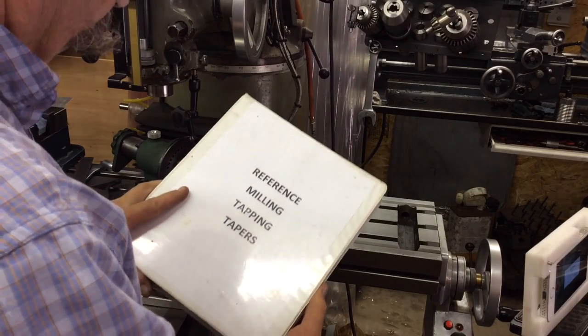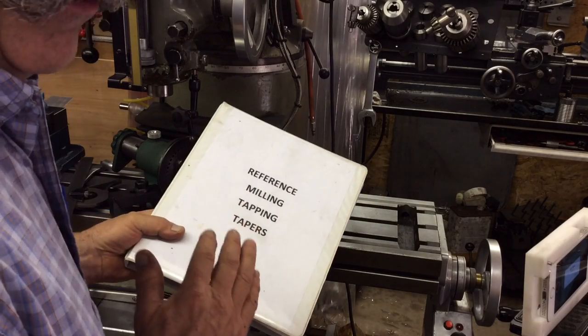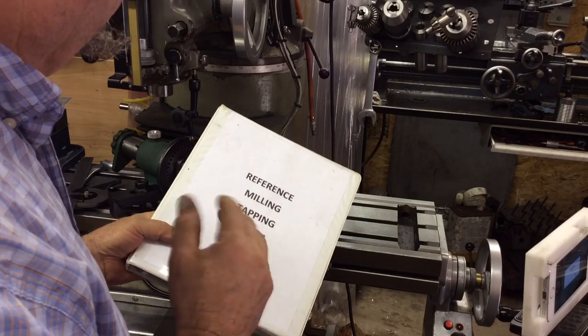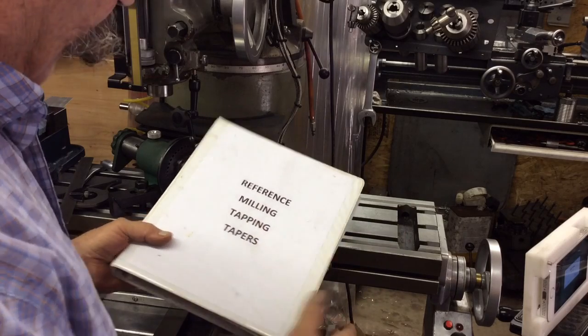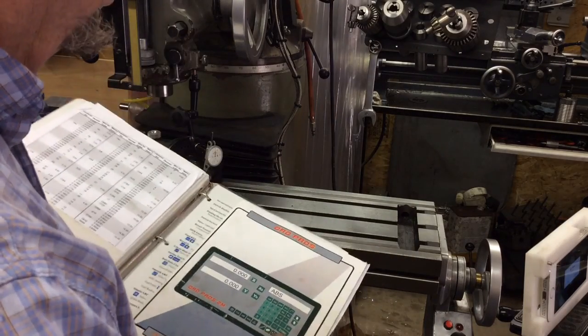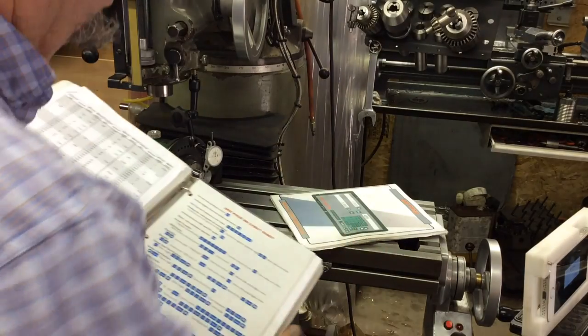I'll show you this. This is kind of a binder I've put together for some quick reference in the shop here, you know, to look up stuff and things like that. So I got the old DRO instruction manual for the mill, a quick cheat sheet.